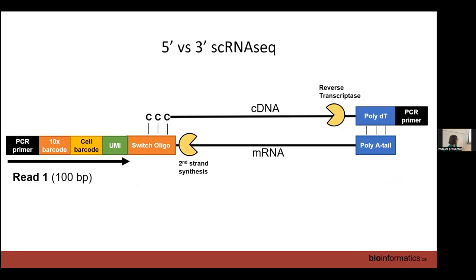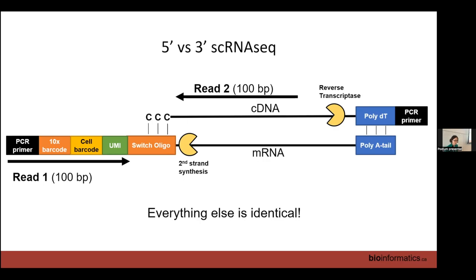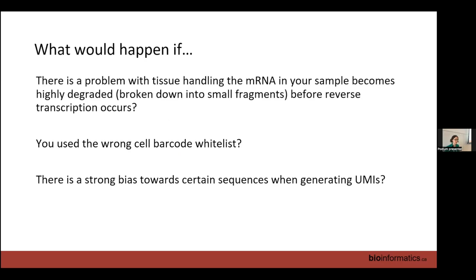Read 1 is all our barcodes; read 2 is in our cDNA transcript — the actual gene. Things can go wrong: if your sample is super degraded you get lots of poly-T in read 2s and have to throw away many reads. What would happen if you used the wrong cell barcode whitelist, or if there's a strong bias when generating your UMIs towards certain sequences?